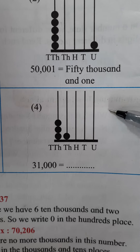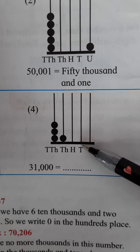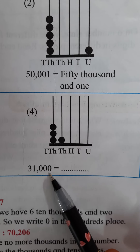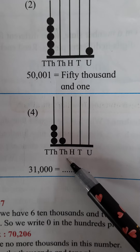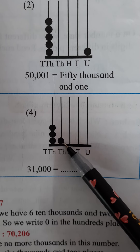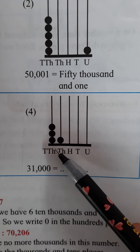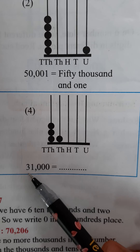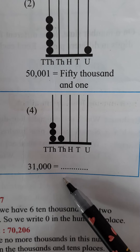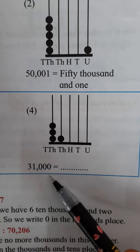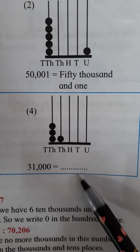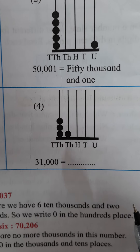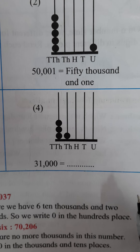Now see the next one. On the unit place there is no symbol, on the hundreds place also no symbol — so we write 0. On the thousands place only 1 symbol is there, so we write 1. On the 10,000 place there are 3 symbols: 1, 2, 3 — so we write 3. We read this number as 31,000. Understand everyone how to read a 5-digit number.